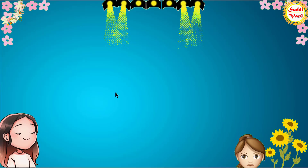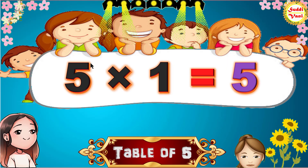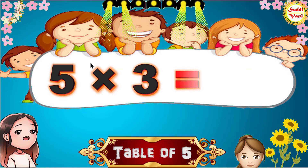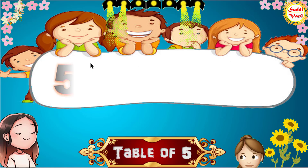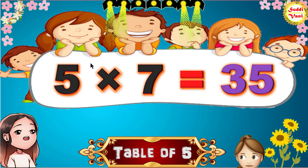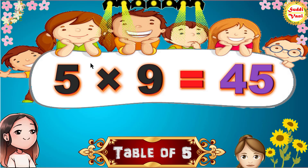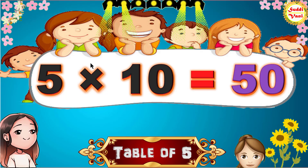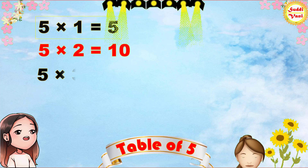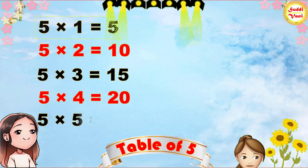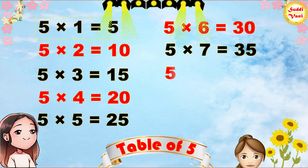Hello children, we will learn table of 5. 5 times 1 is 5, 5 times 2 is 10, 5 times 3 is 15, 5 times 4 is 20, 5 times 5 is 25, 5 times 6 is 30, 5 times 7 is 35, 5 times 8 is 40.